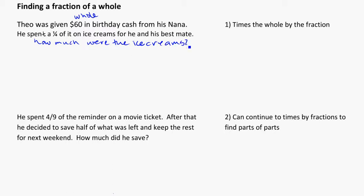We need to find what a quarter of 60 is because he spent a quarter of the $60 on those ice creams. So 60 is the whole and we're just going to times it by the fraction. Plugging this into our calculator, we get $15, so he spent $15 on ice creams.